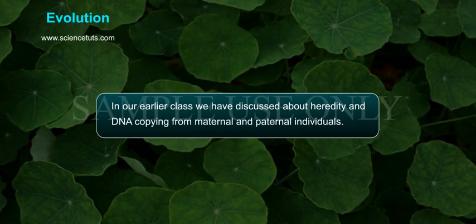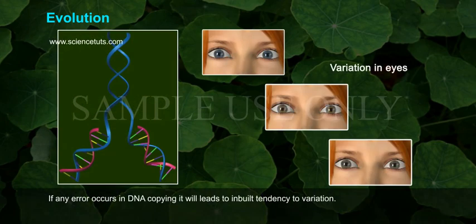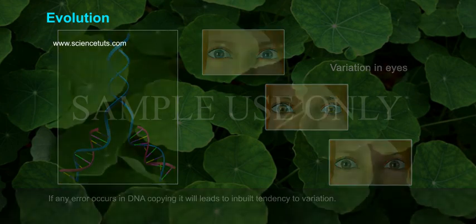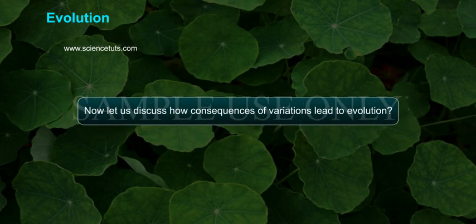Evolution. In our earlier class, we discussed heredity and DNA copying from maternal and paternal individuals. If any error occurs in DNA copying, it will lead to an inbuilt tendency to variation. Not only errors in DNA copying lead to variation, but sexual reproduction also results in variations in individuals, as we discussed earlier. Now let us discuss how the consequences of variations lead to evolution.